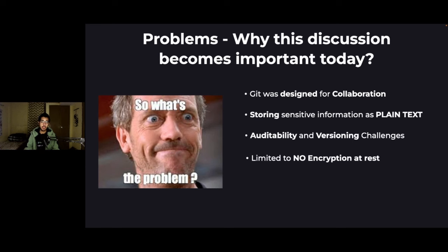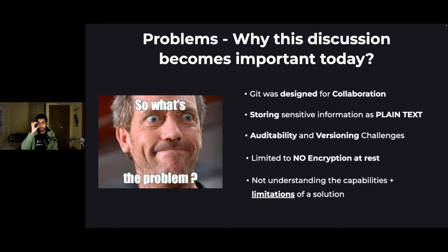Something else I've noticed in the ecosystem is limited to no encryption at rest. A typical GitOps tool will not provide any mechanism to encrypt data at rest. It's one topic to talk about securing secrets in transit, but we should also prioritize encryption at rest and address the vulnerabilities associated with that area. Lastly, there are many tools and solutions available, but not understanding the capabilities and especially the limitations of each solution can introduce new challenges — so we'll discuss those limitations as well.